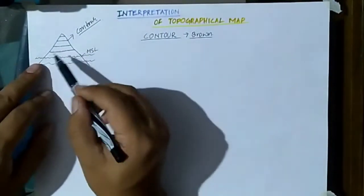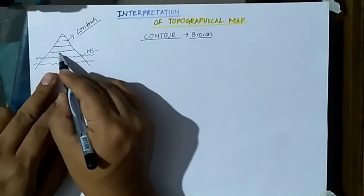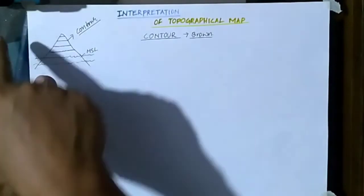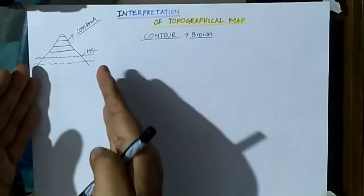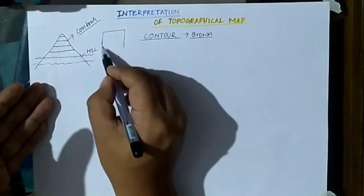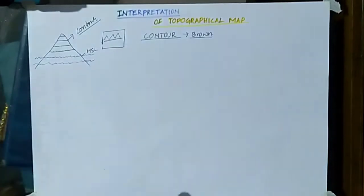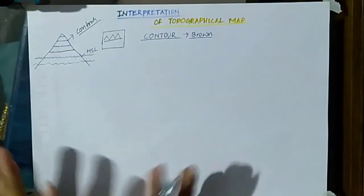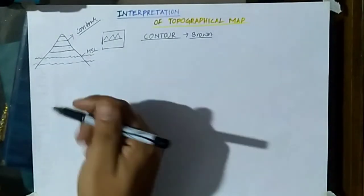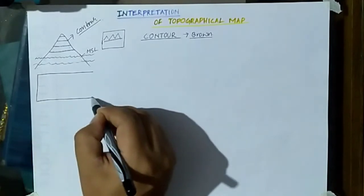The image shown here is in 2D, so we have seen only one side. But the contour line will be drawn all the way around the mountain. If this mountain has to be drawn on the map, we cannot draw mountains in 3D form on the map. So how we represent this on a plain sheet of paper is we need to see the top view.